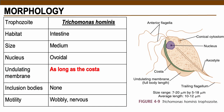The next one is Trichomonas hominis, which inhabits the intestinal tract of the patient — specifically the intestinal lumen. The size is medium with an ovoidal nucleus, similar to Trichomonas vaginalis. The most unique feature of this parasite is the undulating membrane, which is as long as the costa — the same similar size. There are no inclusion bodies present, and the motility is wobbly or nervous.